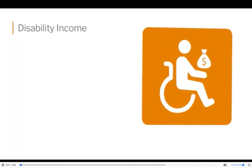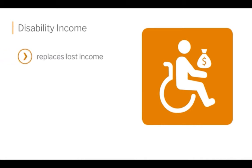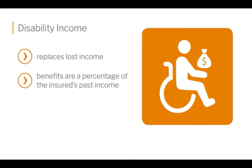Disability income — what exactly is this? It replaces your lost income due to you having been in an accident or becoming too sick to work. Benefits are usually a percentage of whatever your actual income was at the time you became ill or injured. There are exclusions that do apply, so always be sure to check exclusions because those things are not covered.